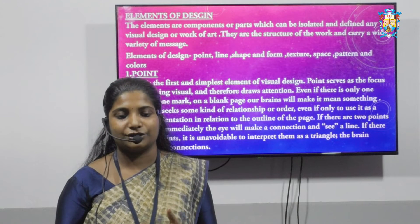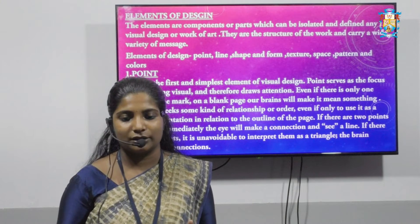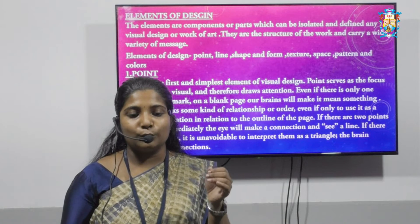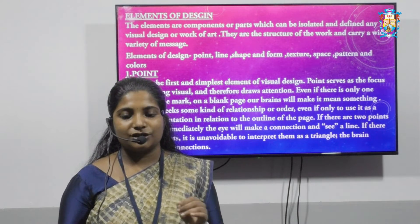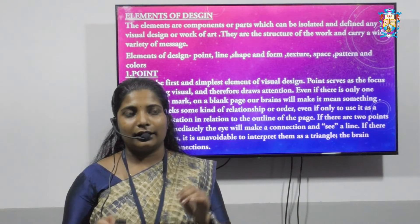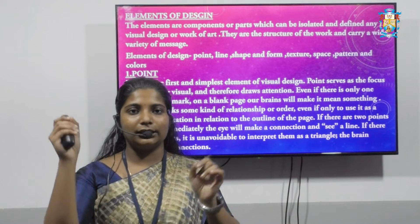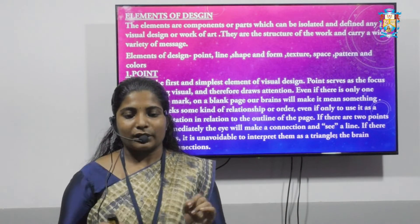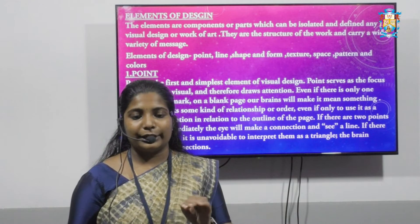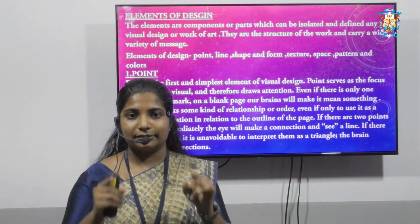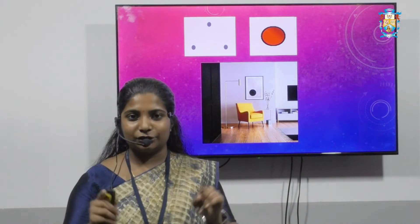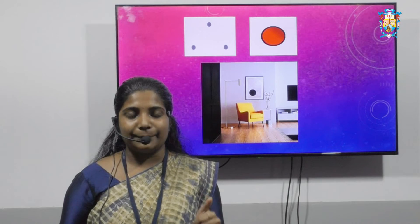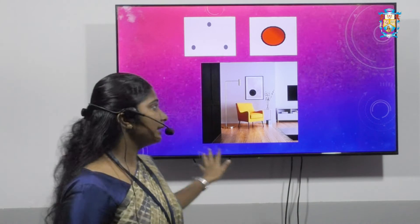If there is only one point, it is used as a point of orientation in relation to the outline of the page. If there are two points on a page, the eye will immediately make a connection and see a line, whether vertical or horizontal. If there are three points, it is unavoidable to interpret them as a triangle — the brain supplies the connection. In an interior space example, a frame is used and it acts as a focal point.